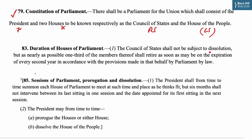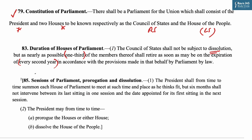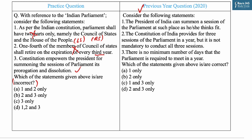The second statement is also incorrect. Under Article 83, the Constitution says the Council of State shall not be subject to dissolution — it is a permanent house — but as nearly as possible one-third, and not one-fourth, of the members shall retire on the expiration of every second year, not third year. The third statement is correct: Article 85 states the President shall summon each house and may prorogue or dissolve the house. So the incorrect statements are one and two only — answer A.